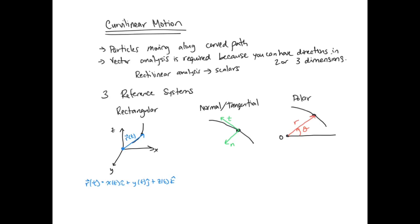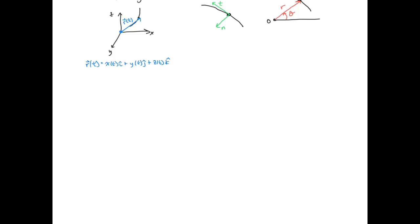We'll come back to normal, tangential, and polar coordinates in another video. Today we're going to focus on rectangular coordinates and look at what it means to define the motion in this way. In this coordinate system, we have x, y, and z values pointing along each coordinate axis. We have i, j, and k, which are unit vectors pointing in those directions.